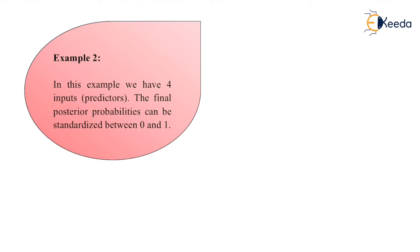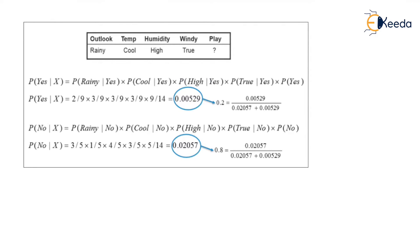In example number two, we have four inputs. The final posterior probability can be standardized between zero and one. After calculating the posterior probability, we get 0.2 for yes given X and 0.8 for no given X — so the result is between 0 and 1.